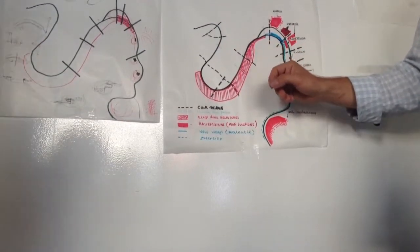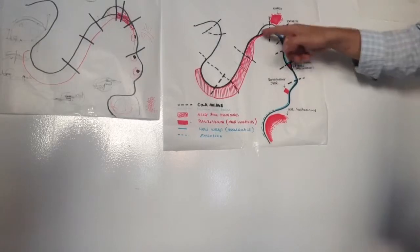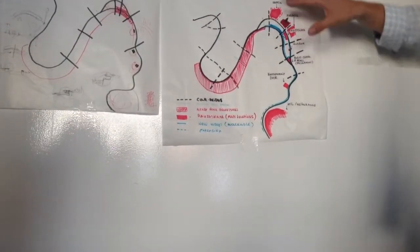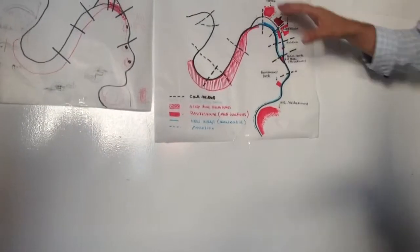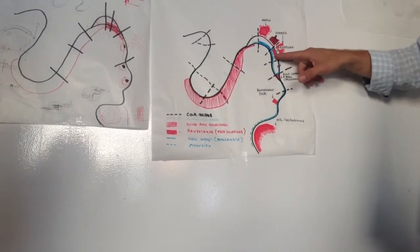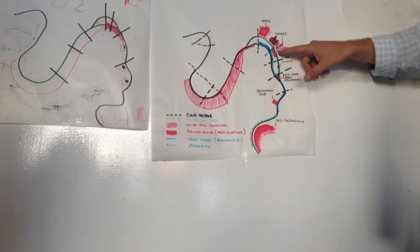So then here we can see that there are some main points of attraction. There's basically the Kremlin, the heart of Moscow. Then we have Zaredia and we have our site here.